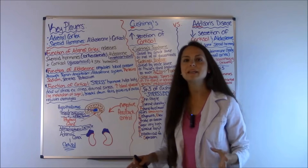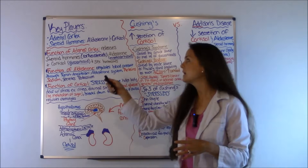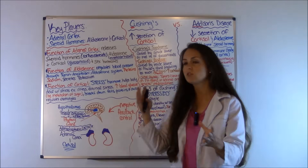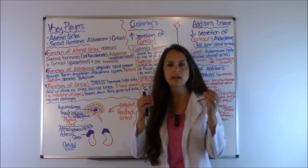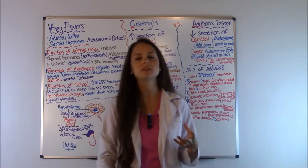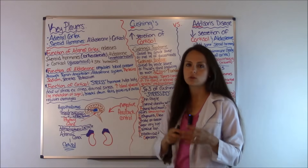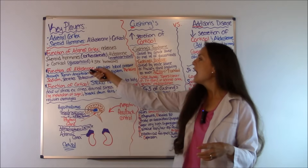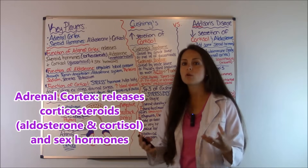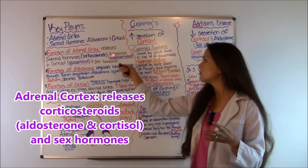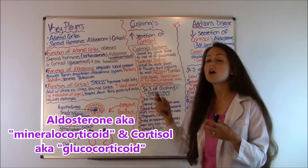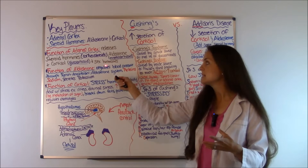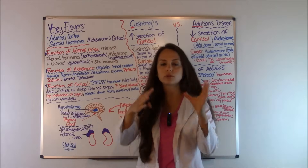Let's begin by talking about the key players in these two endocrine disorders. The key players are the adrenal cortex and steroid hormones, specifically aldosterone and cortisol. The adrenal cortex is located on top of the kidneys in the adrenal glands. The adrenal cortex releases corticosteroids such as aldosterone and cortisol. Aldosterone is also known as a mineralocorticoid and cortisol is also known as a glucocorticoid. It also releases sex hormones.